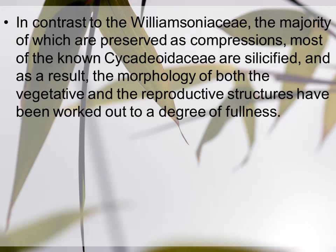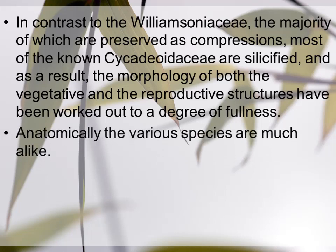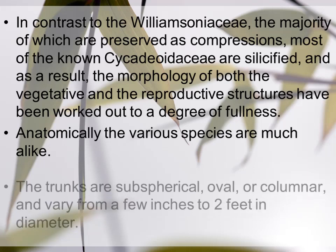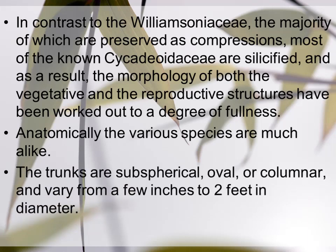Cycadeoidaceae کے جتنے بھی fossils ہیں وہ silicified form میں present ہیں، جس کی وجہ سے ان کے vegetative اور reproductive structures کے morphological characteristics ہمیں کافی حد تک معلوم ہیں۔ Anatomically, the various species are much alike. The trunks are subspherical, oval, or columnar and vary from a few inches to two feet in diameter.